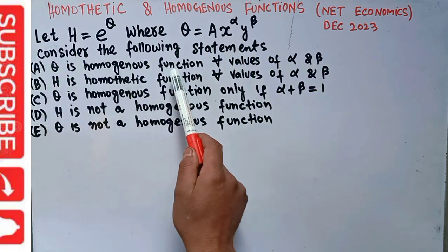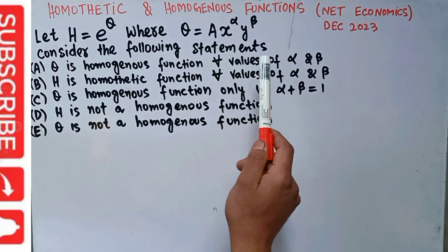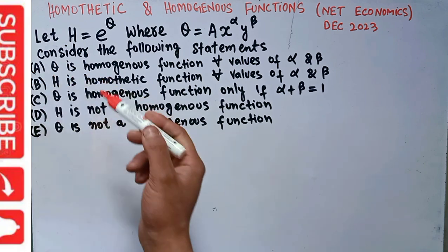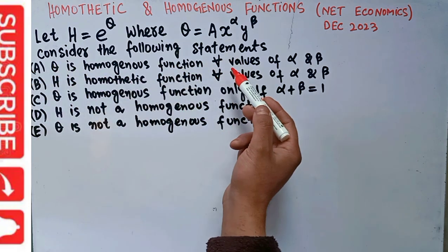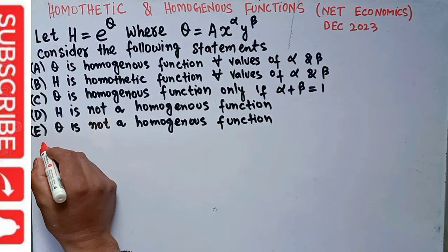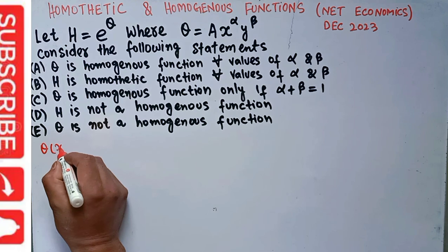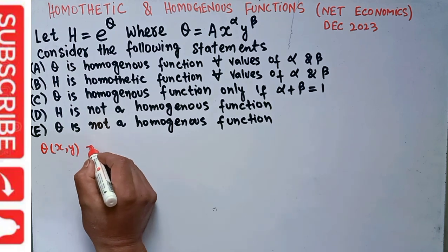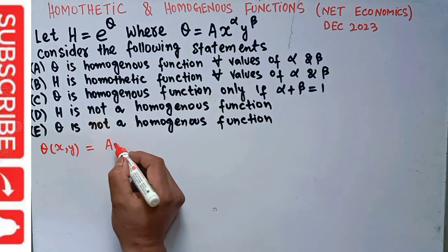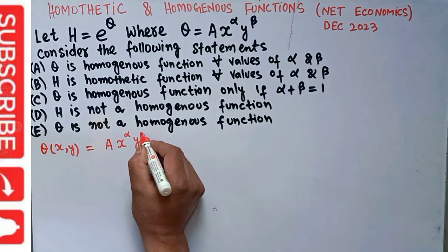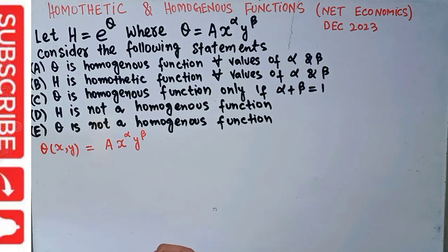The first statement says that q is a homogeneous function for all values of α and β. So q is a function of x and y, which equals a * x^α * y^β. Let us see whether this first statement is correct.